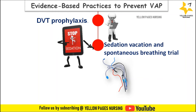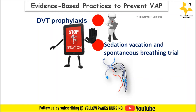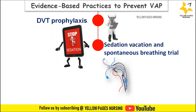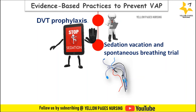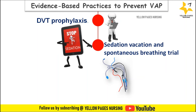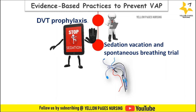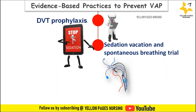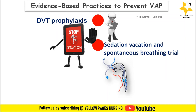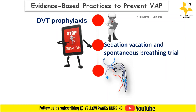Mechanically, DVT pumps or stockings are used. Next comes sedation vacation and spontaneous breathing trial, abbreviated as SAT and SBT, which have been discussed in detail in a previous video linked in the description below. Next comes aspiration of subglottic secretions.